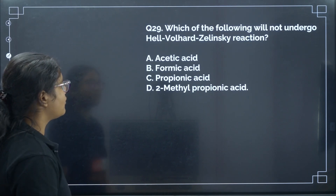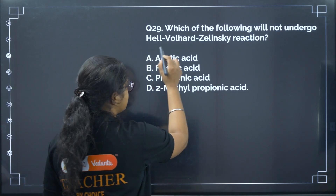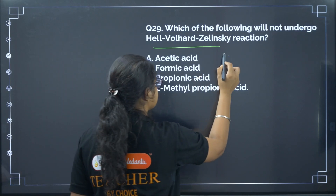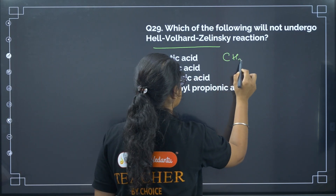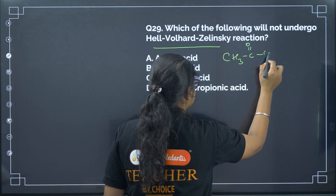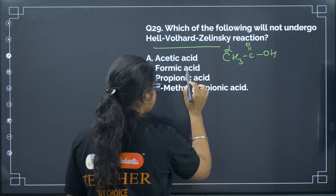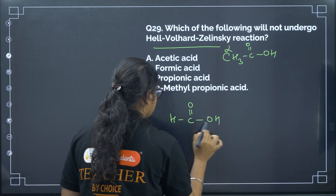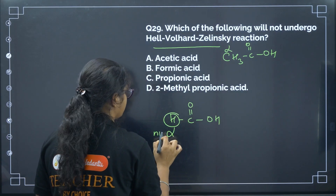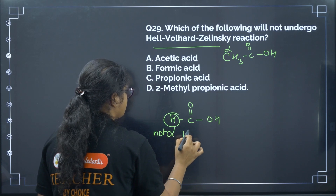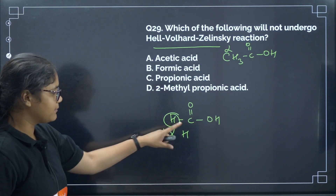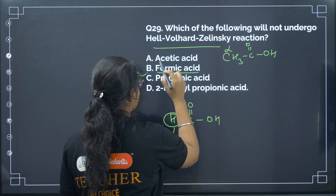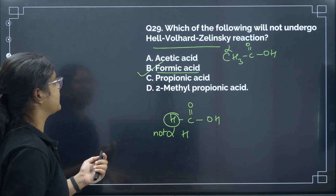Next: which of the following will NOT undergo the HVZ reaction? Again, alpha hydrogen is required. In acetic acid, there is an alpha hydrogen, so it will show HVZ. In formic acid, the structure has no separate alpha carbon — the carbon bearing the COOH group is the same carbon as where the hydrogen is attached, so there is no alpha hydrogen. Formic acid will not show the HVZ reaction.